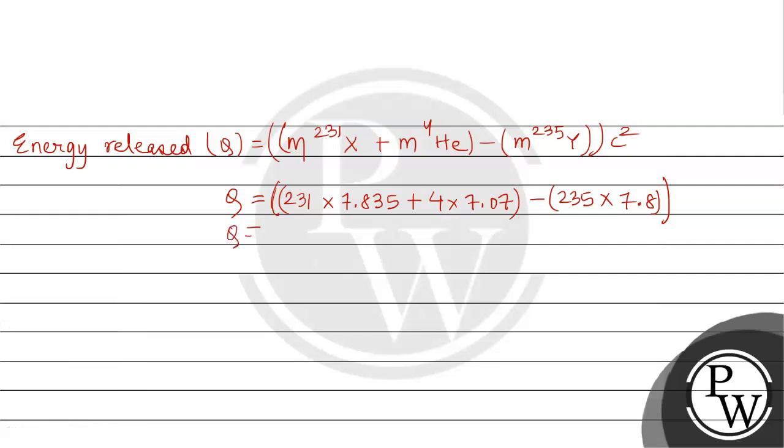So 231 × 7.835 gives 1809.885, plus 4 × 7.07 gives 28.28, minus 235 × 7.8 gives 1833. This equals 1809.885 plus 28.28 minus 1833, which gives 5.165.